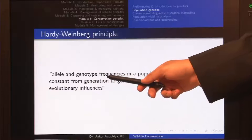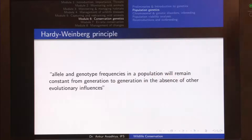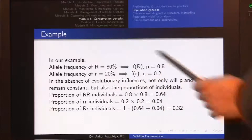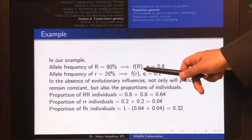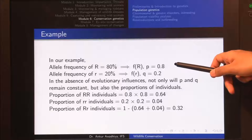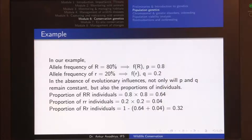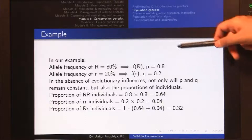In other words, if allele and genotypic frequencies in a population are changing from generation to generation, then some evolutionary influences are happening. Coming back to our example, the allele frequency of R (represented by p) is 0.8 and the allele frequency of r (represented by q) is 0.2. In the absence of evolutionary influences, p and q will remain constant at every generation.